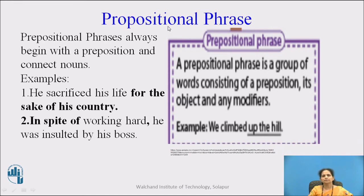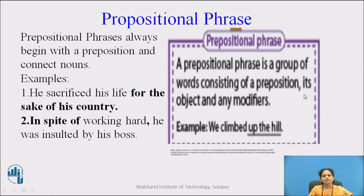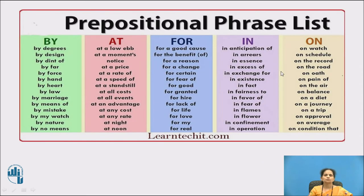The first one is prepositional phrase. Prepositional phrases always begin with a preposition and connect nouns. Examples: 'He sacrificed his life for the sake of his country.' And 'In spite of working hard, he was insulted by his boss.' A prepositional phrase is a group of words consisting of a preposition, its object, and any modifier. Here is a list of prepositional phrases — go through all these ones.